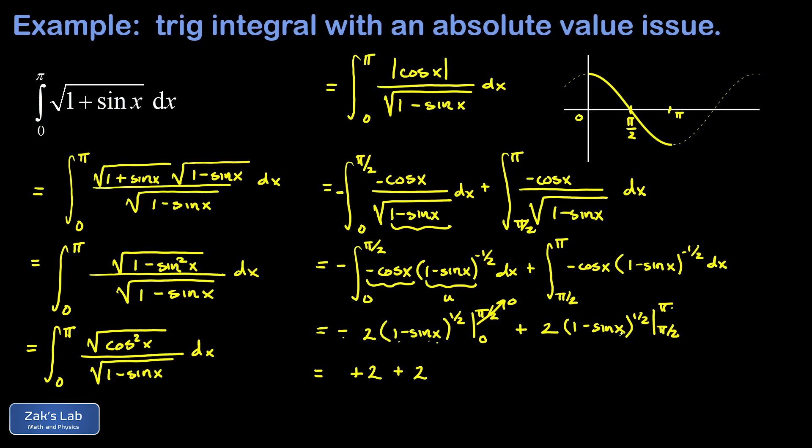If I replace x by pi over 2 I end up with 1 minus 1 and that's 0. So we end up with a 2 plus 2 or 4 for the numerical value of this integral.